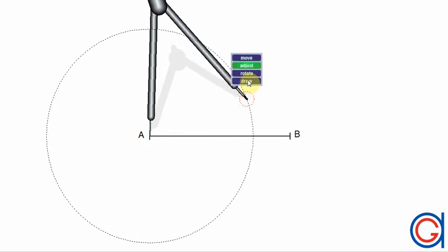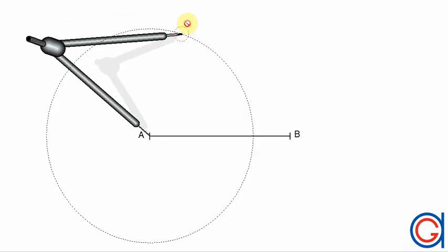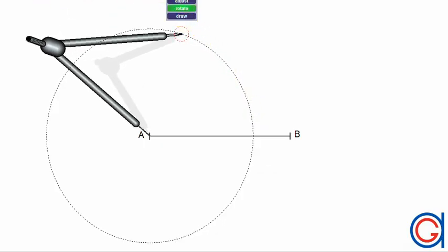These arcs are going to have the same radius. The only conditions are that the length of the radius must be longer than half the length of our segment AB.